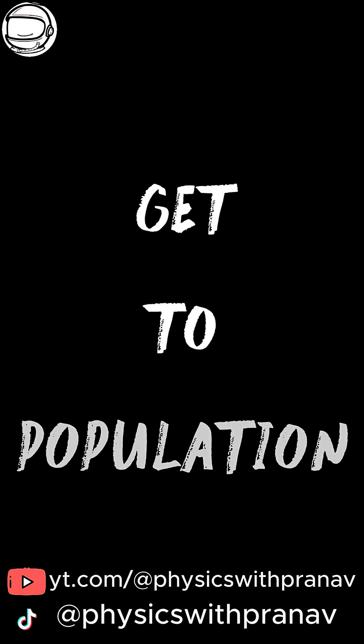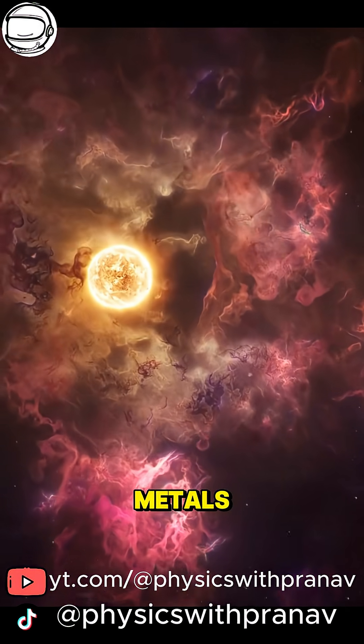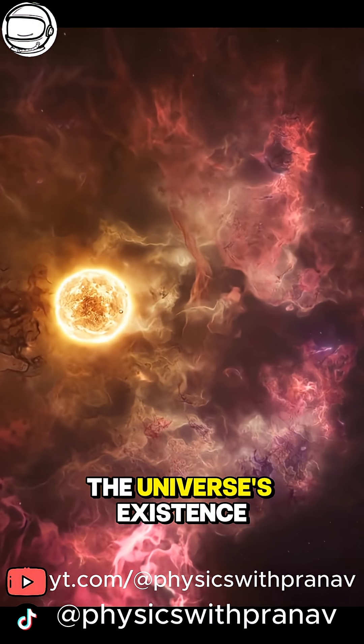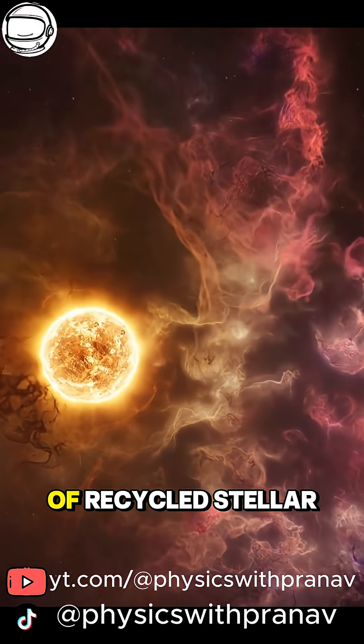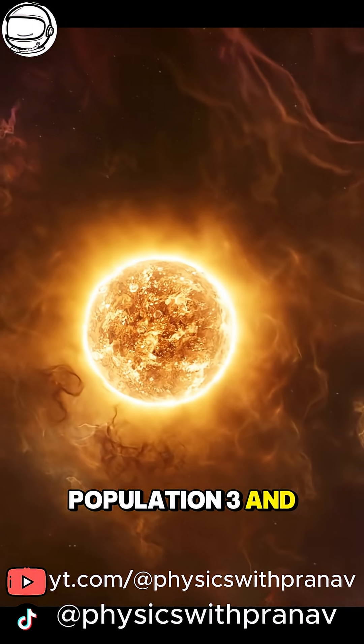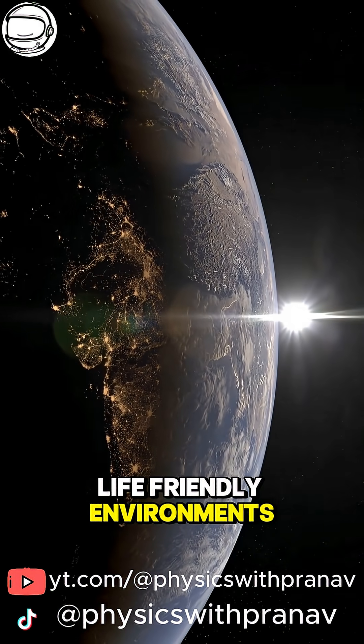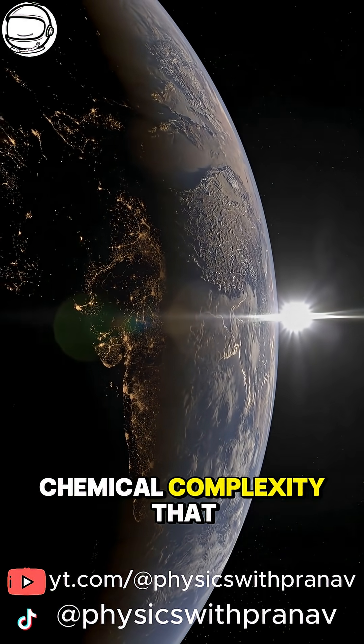And finally, we get to Population 1 stars, which are our kind of stars, including the sun. These stars are rich in metals, formed later in the universe's existence in galaxies full of recycled stellar material from explosions of Population 3 and Population 2 stars. They're the ones that produce planets, life-friendly environments, and all the chemical complexity that we see today.